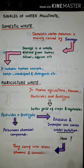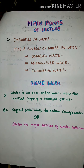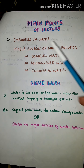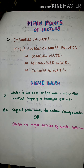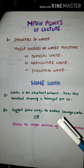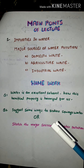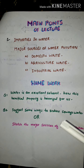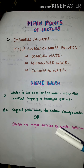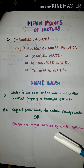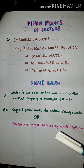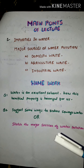The third source is industrial waste, which we will cover in the next lecture. Now for the main points of today's lecture: water is an excellent solvent and can dissolve a variety of substances. When it flows through the earth's surface, it dissolves mineral salts and other substances. Water pollution occurs when undesirable foreign substances are introduced into natural water. The substances that cause water pollution are called pollutants — this is a very important exam question.